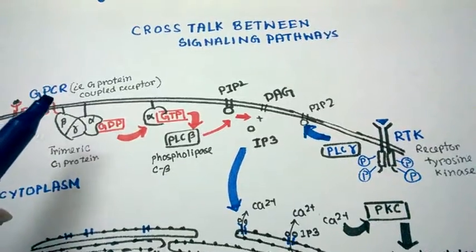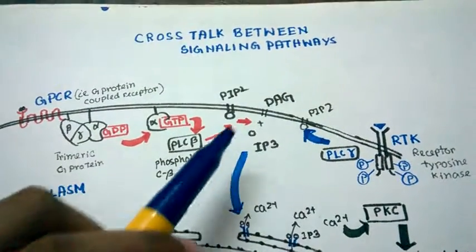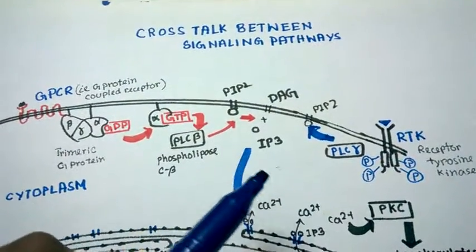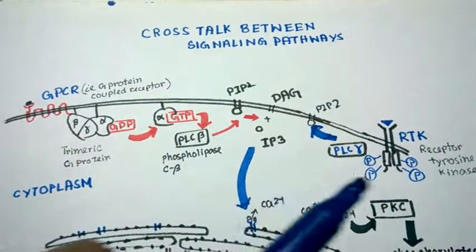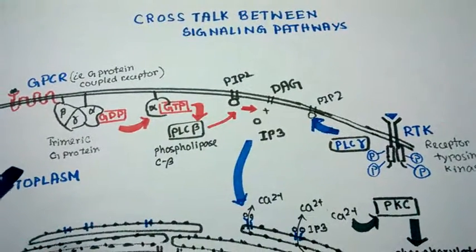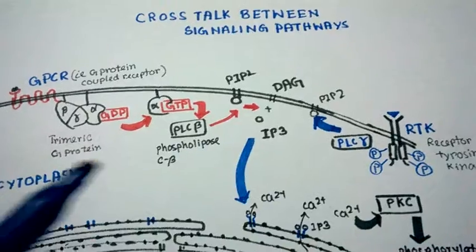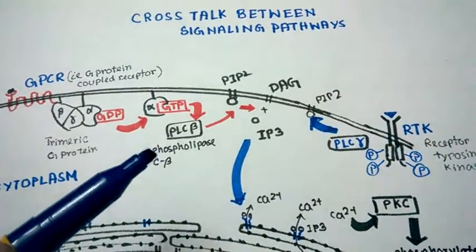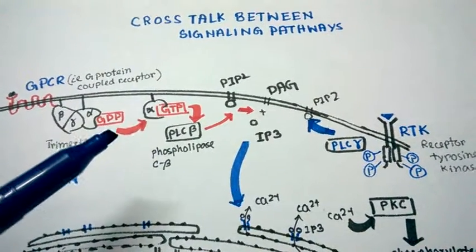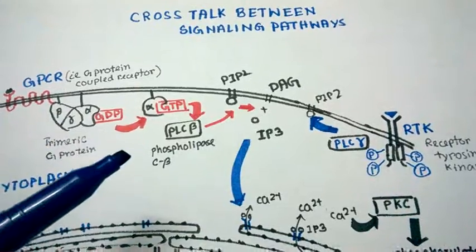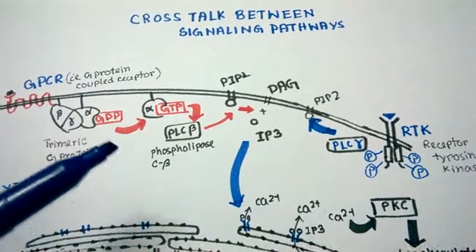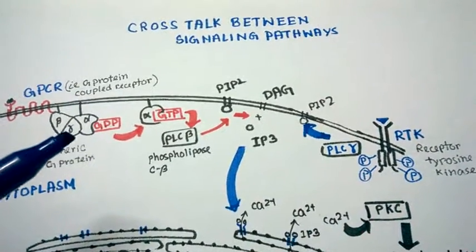It appears that the downstream signaling molecules, such as second messengers used by both signaling pathways, are the same. This enables the cell to transduce signals in a faster manner than using distinct signaling molecules.